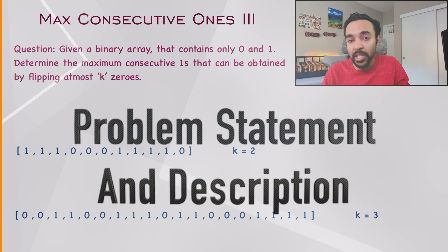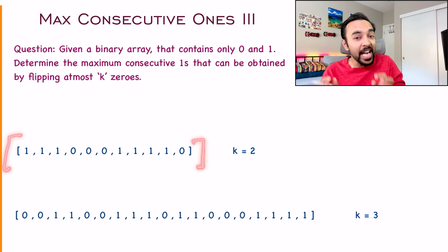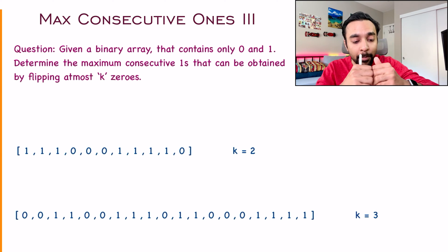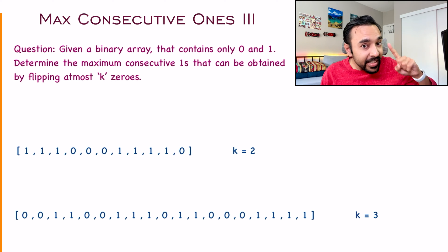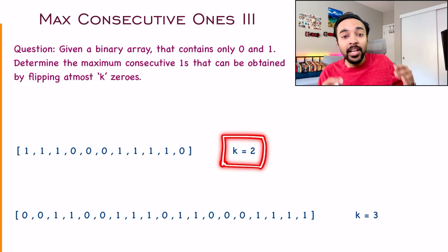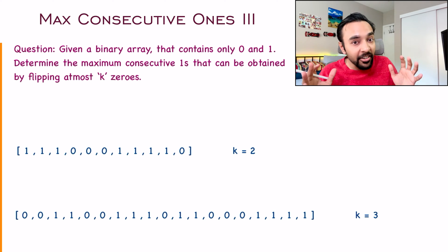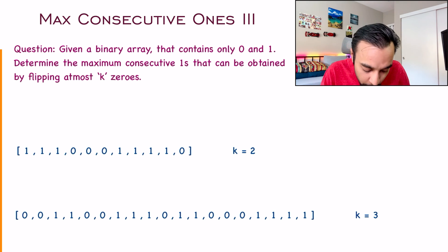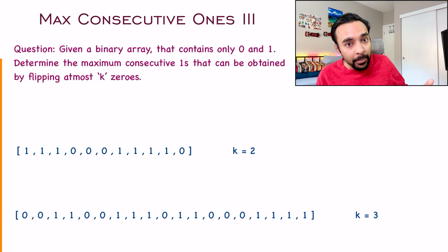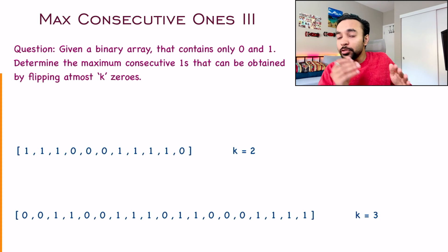Let us make sure that we are understanding the problem statement correctly. Since this is a follow-up problem, the basic idea still remains the same. You are given a binary array that only has zeros and ones, and you have to find out the maximum consecutive ones you can find. There is one additional condition though — you have a value of k. This value of k tells you that you can flip at most k zeros to one, and then determine what is the maximum consecutive ones in the array.